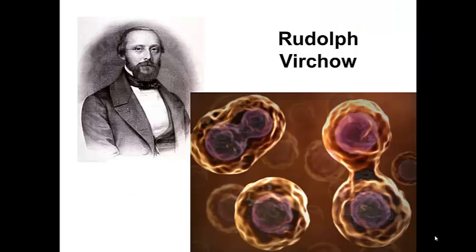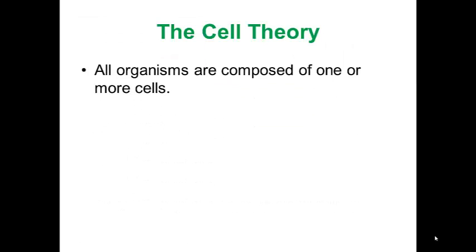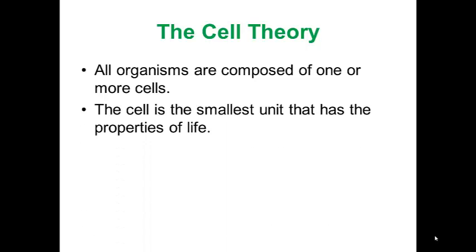And finally, Rudolf Virchow found that cells arise from other cells by cell division. So the work of these scientists and many others led to the development of what is now known as the cell theory in the mid-19th century. And the cell theory states that, first, all organisms are composed of one or more cells. Second, the cell is the smallest unit that has all of the properties of life. And third, that cells arise only from pre-existing cells.